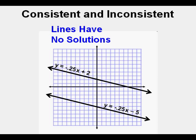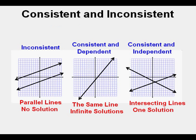To summarize, inconsistent means no solutions and that the lines are parallel. Consistent and dependent means two equations that are really the same line. Consistent and independent means two lines with different slopes that intersect at one point.